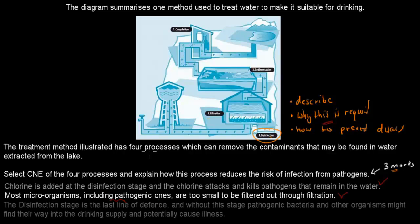And then I wrote: the disinfection stage is the last line of defense. And without this stage, pathogenic bacteria and other organisms might find their way into drinking supply and potentially cause illness. So the disinfection stage is the last line of defense. It's the last one before it becomes drinking water. And yeah, without that stage, the pathogenic bacteria will still remain in the water, and that could ultimately lead to the illness itself. In other words, how this prevents the spread of disease. That was the last point. So that's three marks out of three.